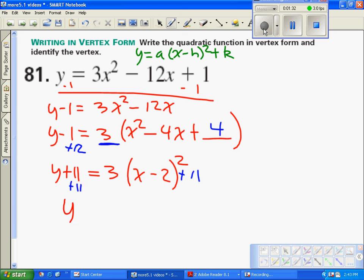We get y equals 3 times x minus 2 squared plus 11. That's the vertex form, so the vertex is 2 comma 11.